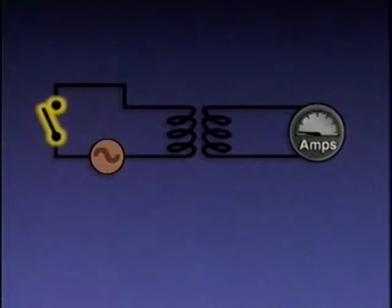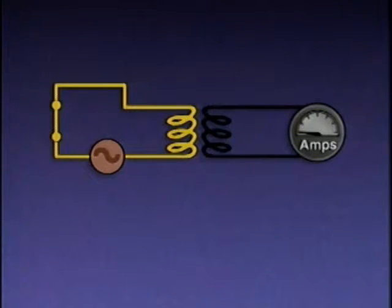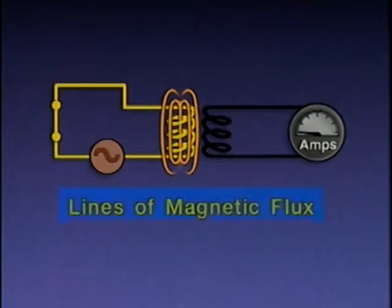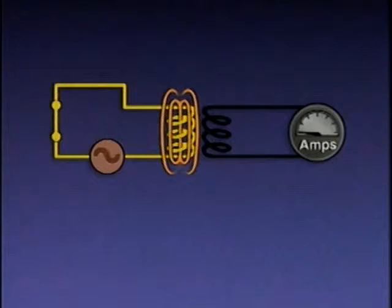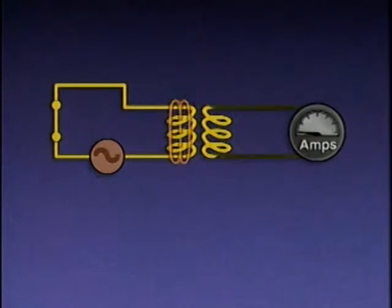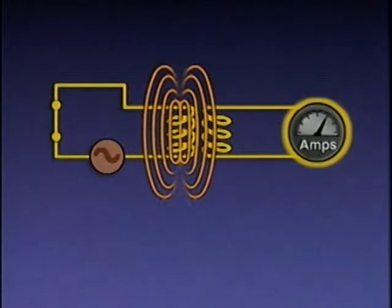During operation, the switch is closed to energize the primary side of the circuit. This causes current to flow from the AC power supply, through the switch and the primary winding of the transformer, and back to the power supply. As current flows through the primary winding, a magnetic field develops around the winding, represented by a series of lines called lines of magnetic flux. The alternating current causes the magnetic field to expand and collapse repeatedly. As the magnetic field expands and collapses, the flux lines cut across the secondary winding, inducing a voltage in the secondary winding and causing current to flow through the secondary side of the circuit. The ammeter detects the current flow, and its pointer provides a visual indication.